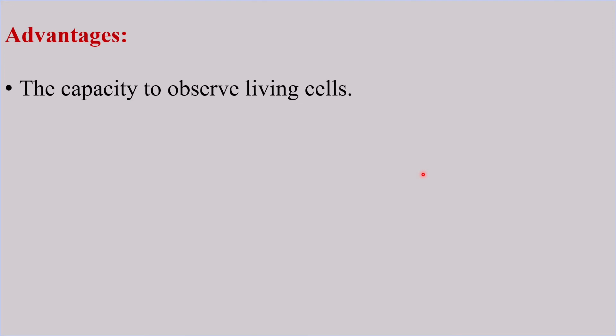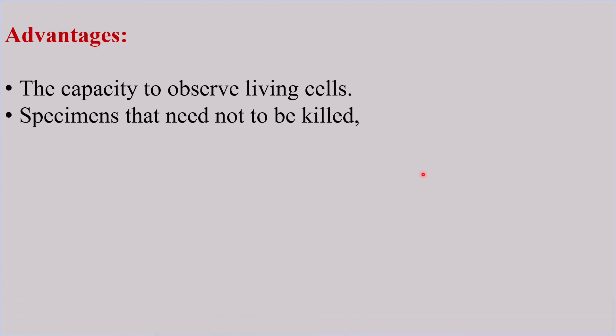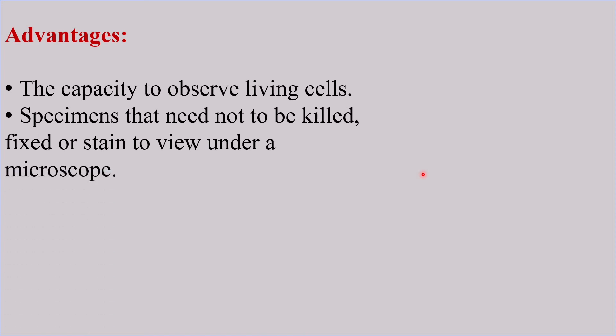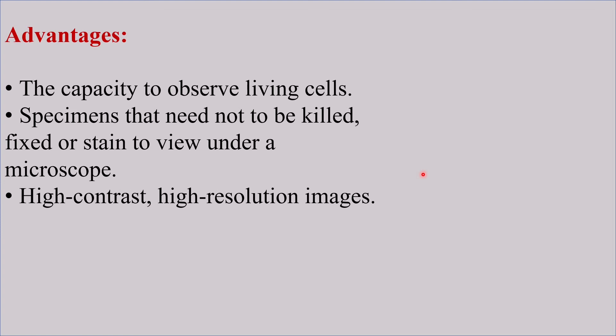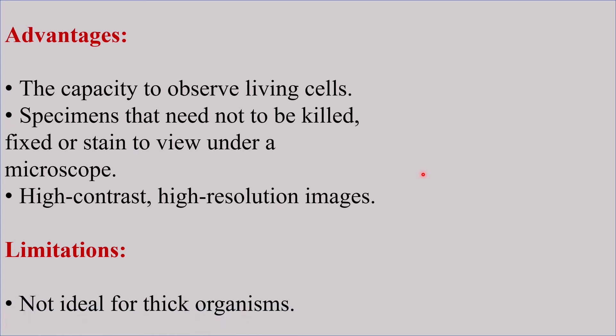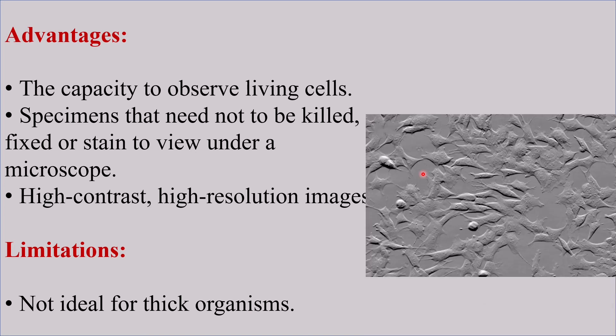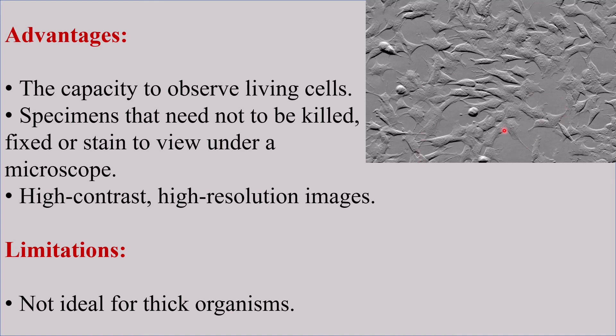The advantages of using a phase contrast microscope include the capacity to observe living cells — specimens need not be killed, fixed, or stained to be viewed under the microscope. High contrast, high resolution images are formed. However, the limitation of this microscope is that it is not ideal for thick organisms. This is an image of a cell line observed under a phase contrast microscope. Hope you understood the concept. If you liked my lesson, please do like, comment, and share my video. Thank you.